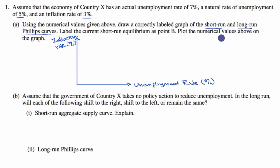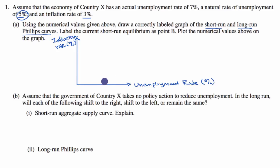We want to graph the short-run and long-run Phillips curves. Let's do the long-run first, because the long-run just sets our unemployment rate at the natural rate of unemployment and isn't related to our inflation rate. It will just be a vertical line at our natural rate of unemployment, which is 5%. So I'll call that our long-run Phillips curve, right there at 5%.